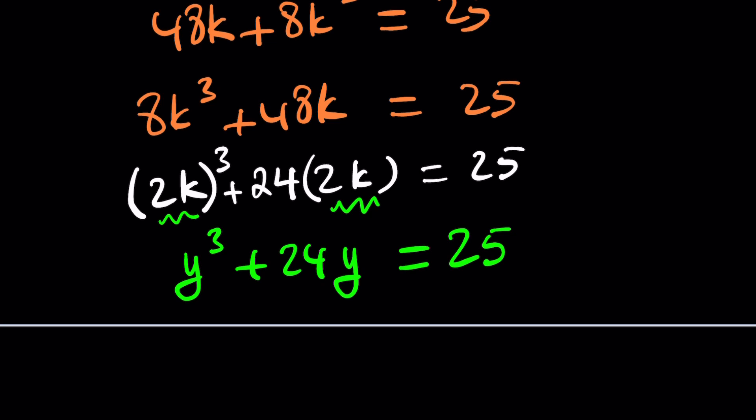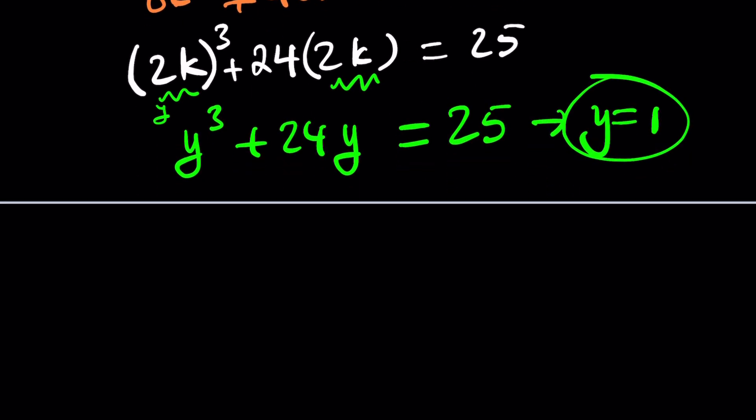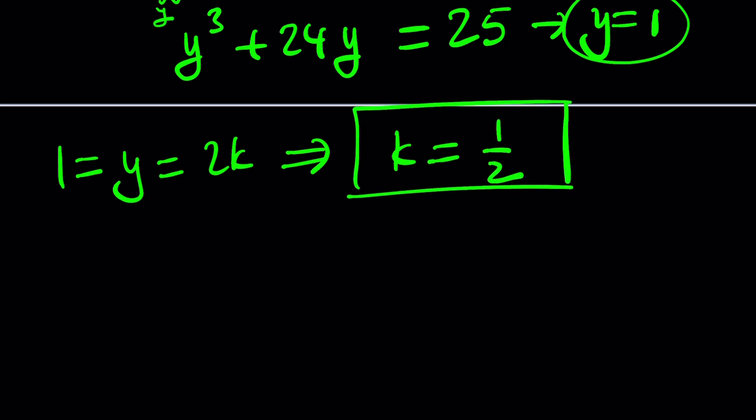Now, why is it equal to 1? Why? Because it's easy. Look, 1 plus 24 equals 25. Remember what I've been telling you. If the sum of the coefficients in a polynomial is 0, or if y equals 1 works, it is a solution. Obviously. And it's so obvious that 1 plus 24 is 25, isn't it? So y equals 1 is a solution. But wait a minute. Where does y come from? From 2k. Okay, so y is equal to 2k and y is equal to 1. What does that mean? It means k is equal to 1 half. Beautiful. We were looking for k and we found it.